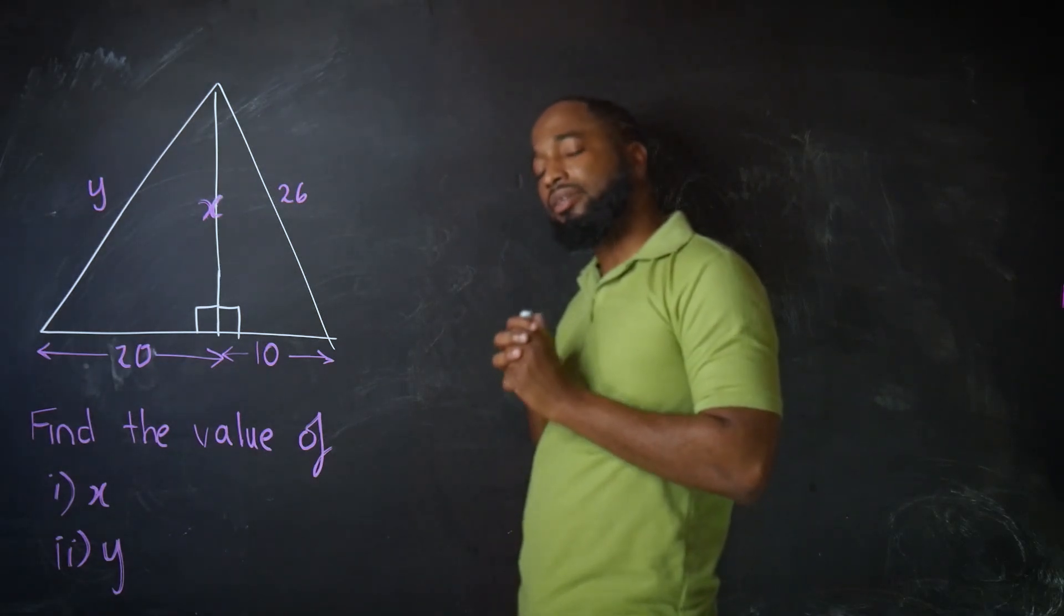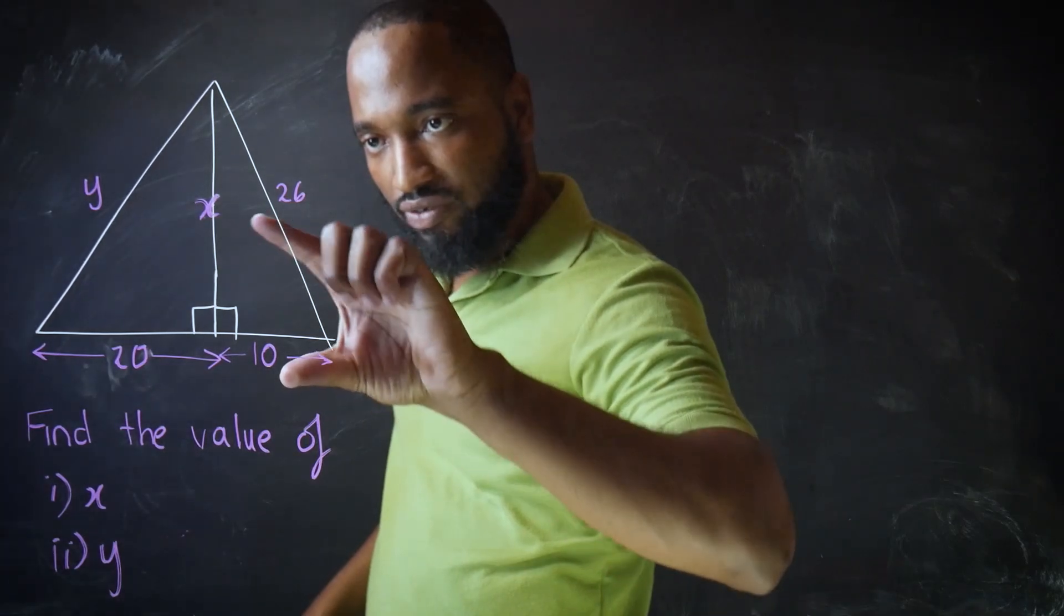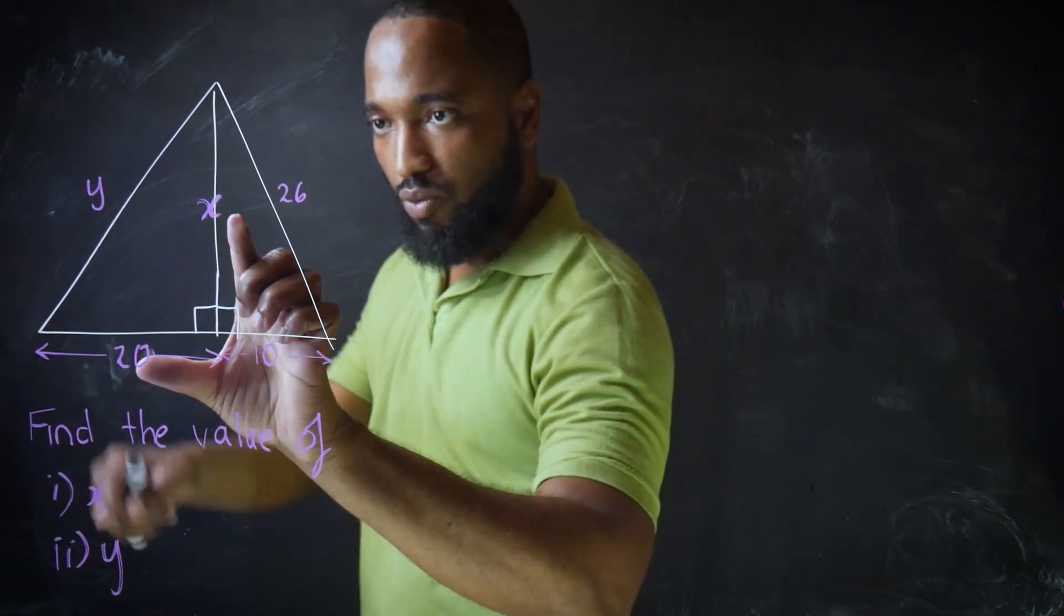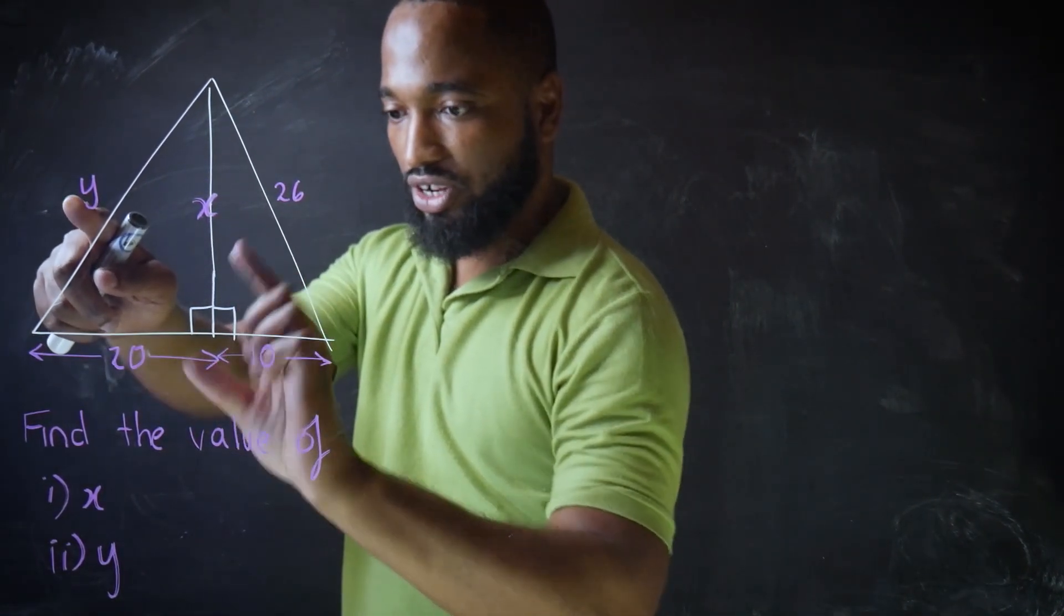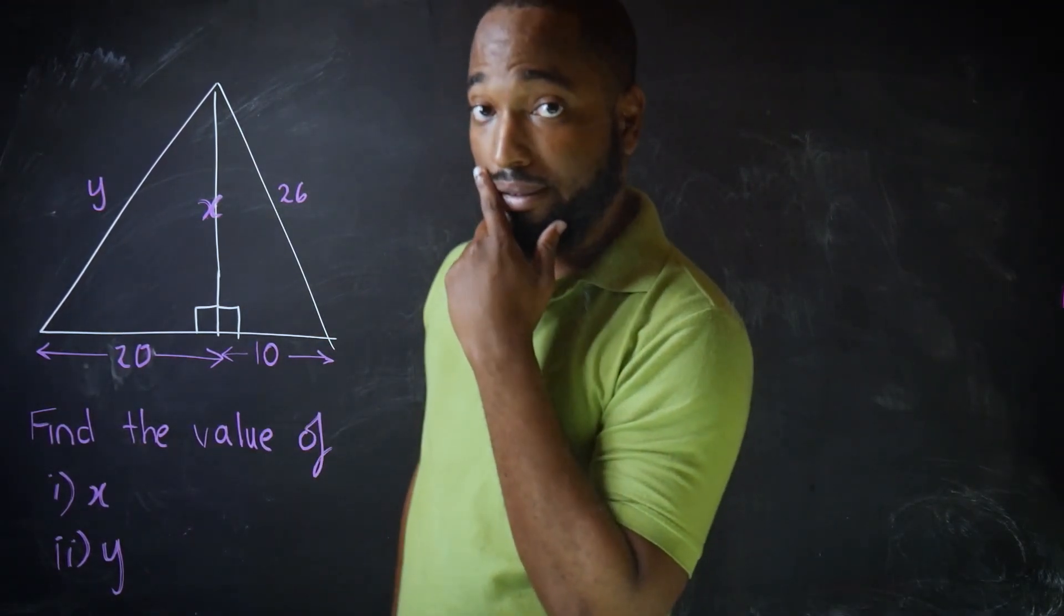I like it. So the first thing you need to do is find X. You have these two sides of this triangle. So you'll find X and then you need to find Y because you'll have these two sides of this triangle. Find the value of X, then find Y. Nice.